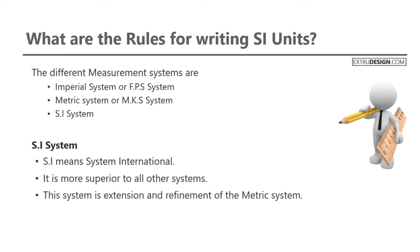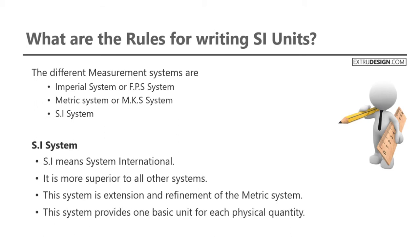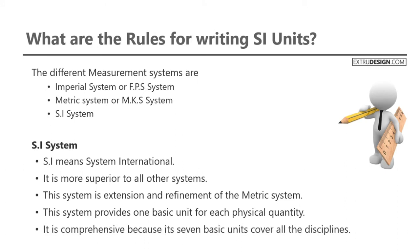The SI system is an extension and refinement of the metric system. It provides one basic unit for each physical quantity. This system is comprehensive because it covers all disciplines with seven basic units. So let us discuss what are the different rules for writing SI units.